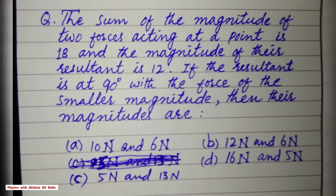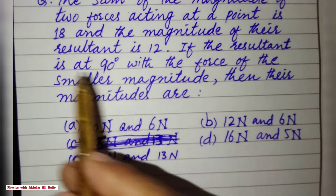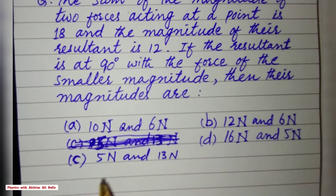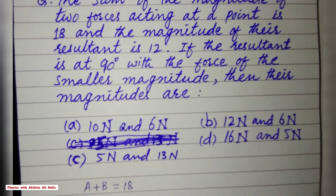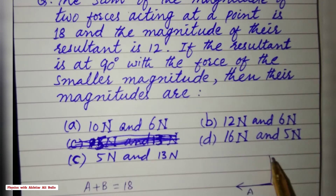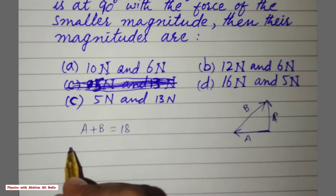The sum of forces is 18. The forces are A and B, so A plus B equals 18. The smaller force is A, and the resultant is perpendicular to this force. The other force is B.